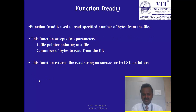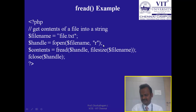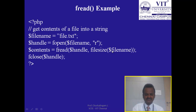The fread function reads a specified number of bytes from a file. It accepts two parameters: the file pointer and the number of bytes to read. It returns the read string on success or false on failure. In the example, the file name is stored in $filename, the file is opened in read mode, and fread is called with the file pointer and filesize($filename) to calculate the total bytes. This reads the entire file into the string $contents. Finally, the file is closed.